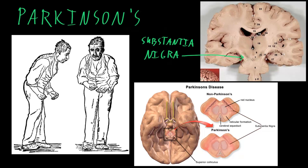These cells are dopaminergic neurons, meaning they are neurons that release the neurotransmitter dopamine at synapses with other neurons. Dopamine is an important neurotransmitter that lets neurons communicate with each other. There are other small collections of dopaminergic neurons scattered around the central nervous system, and these cells may also be lost with Parkinson's disease. But most of the motor abnormalities appear to stem from the change that happens to the substantia nigra, where these dopaminergic neurons are lost.